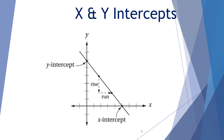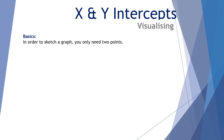Before we go into this video, a quick question. If I have a set of axes and I wish to sketch a graph, what's the minimum number of points required to do so? Clearly, I only need two points between which I can draw a line. In order to sketch a graph, you only need two points.